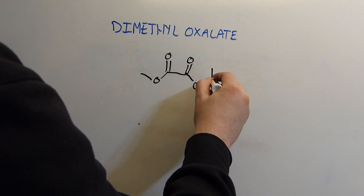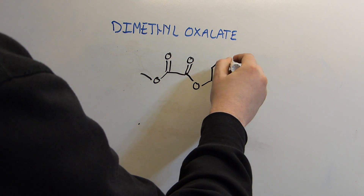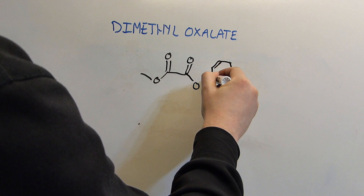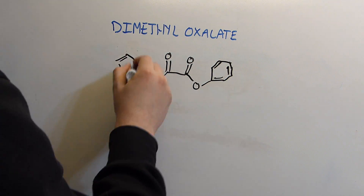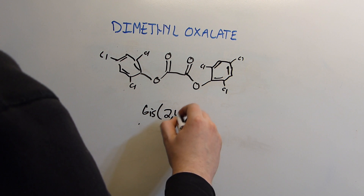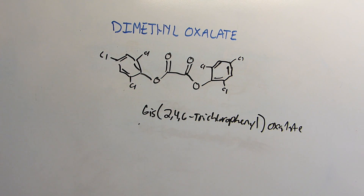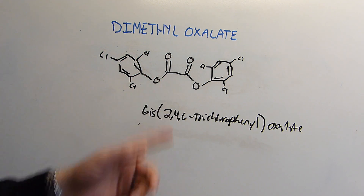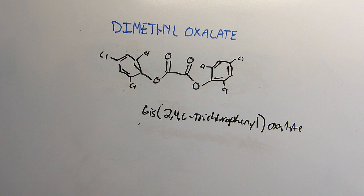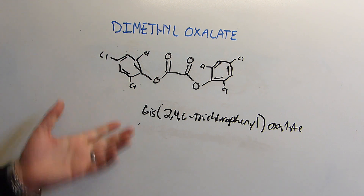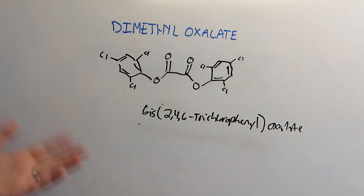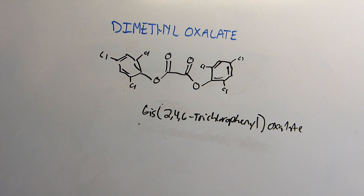TCPO — trichlorophenyl oxalate — is used in glow sticks, and it's made from the transesterification reaction of a dialkyl oxalate. In our case it'll be dimethyl oxalate with trichlorophenol, which is something else I can make in an upcoming video since I already did a video on phenol, and you basically just need to bubble chlorine through phenol for an extended period of time with a catalyst. So that'll be another video coming up in the future.